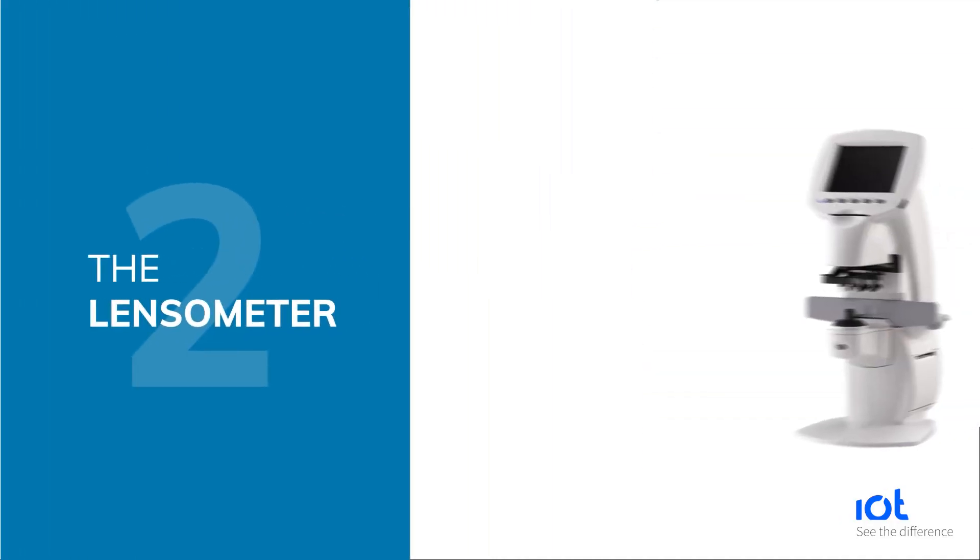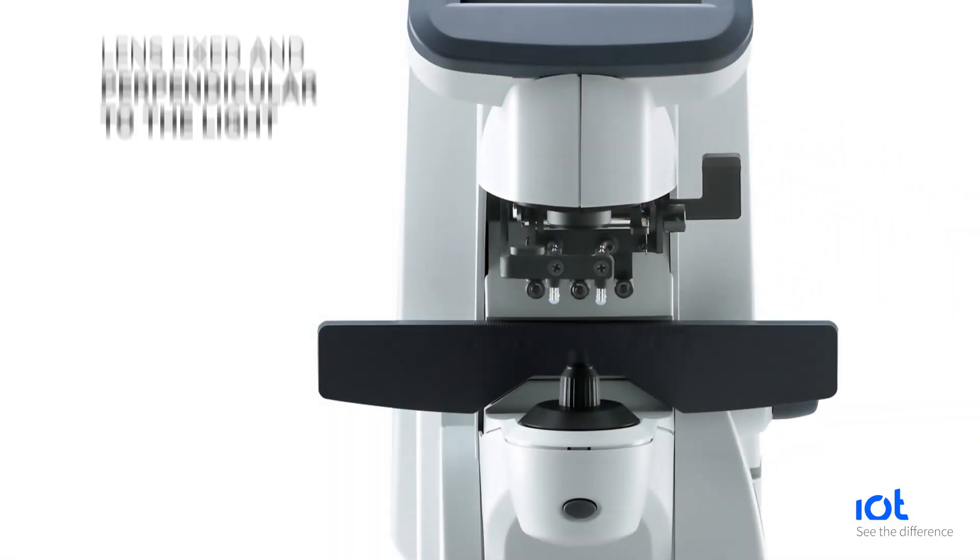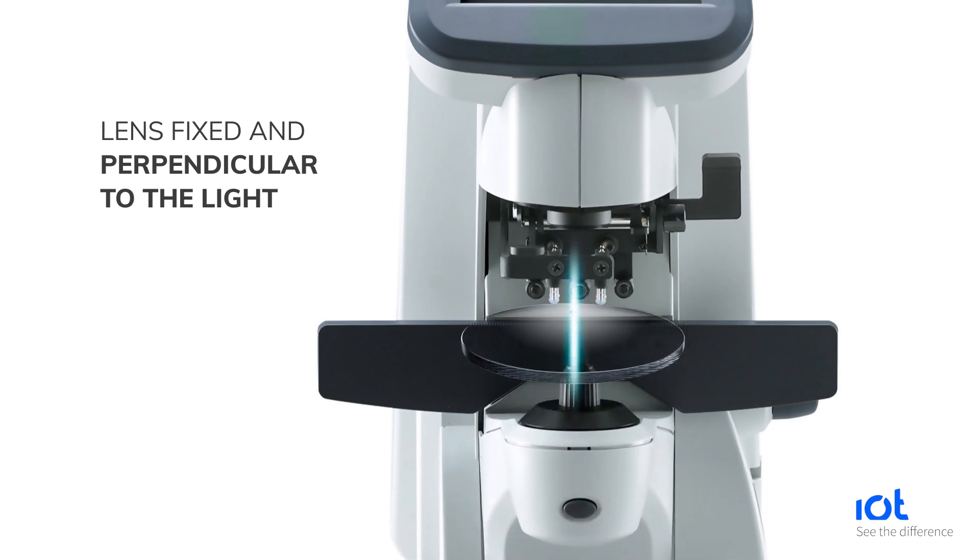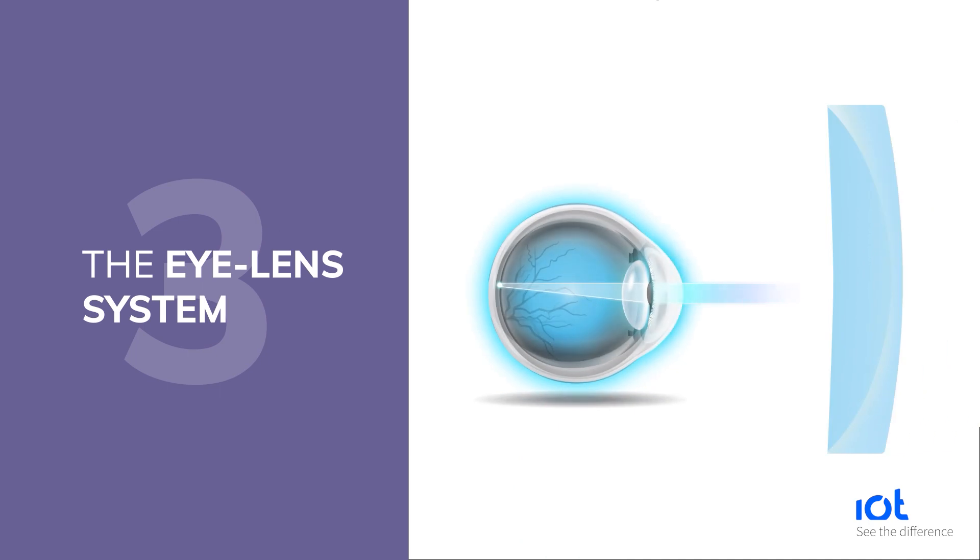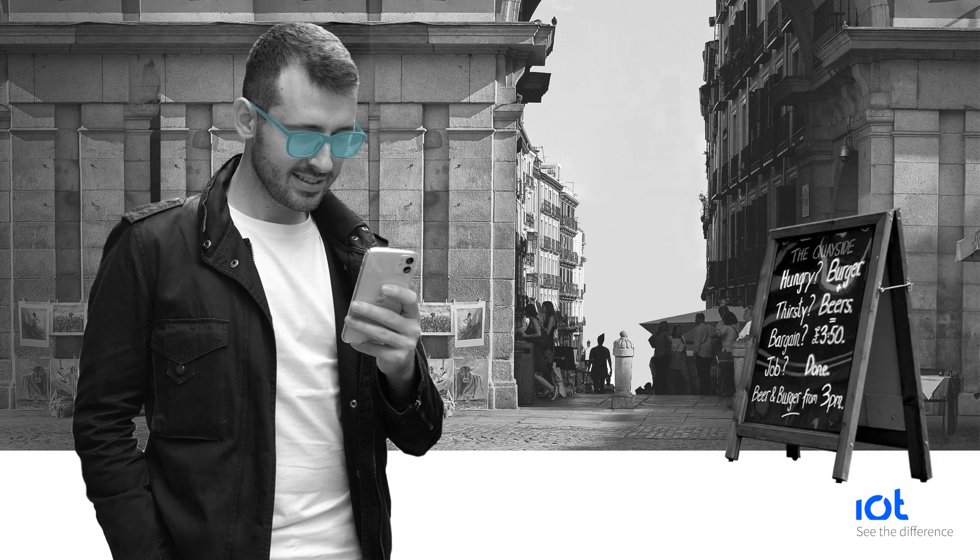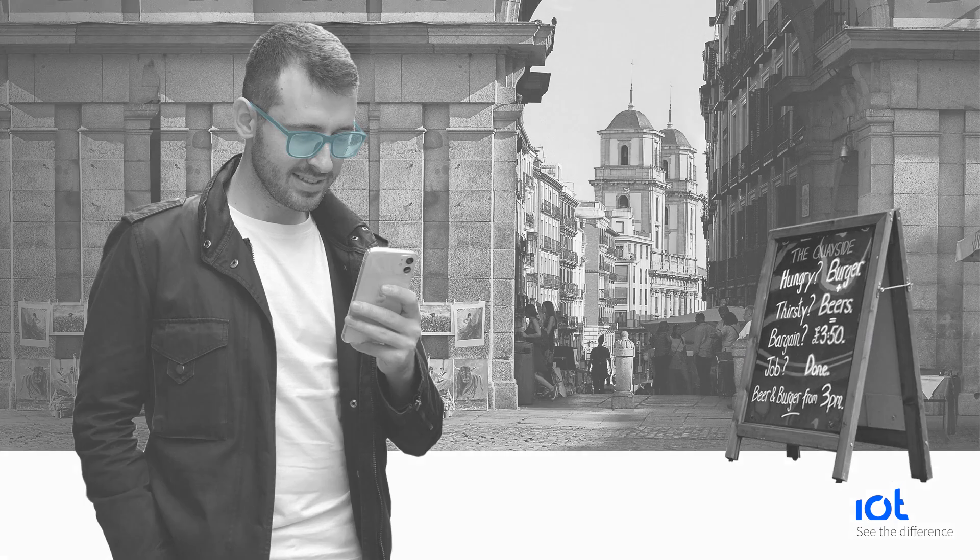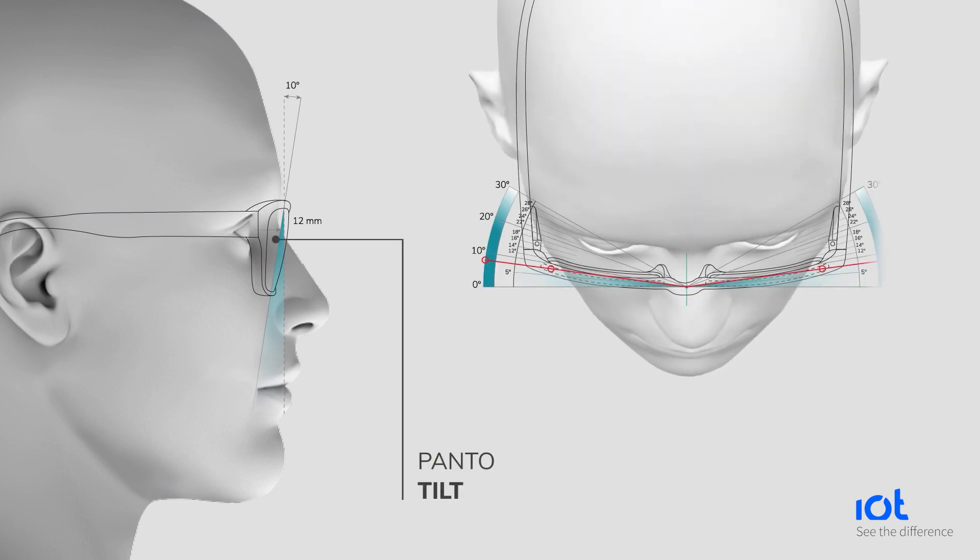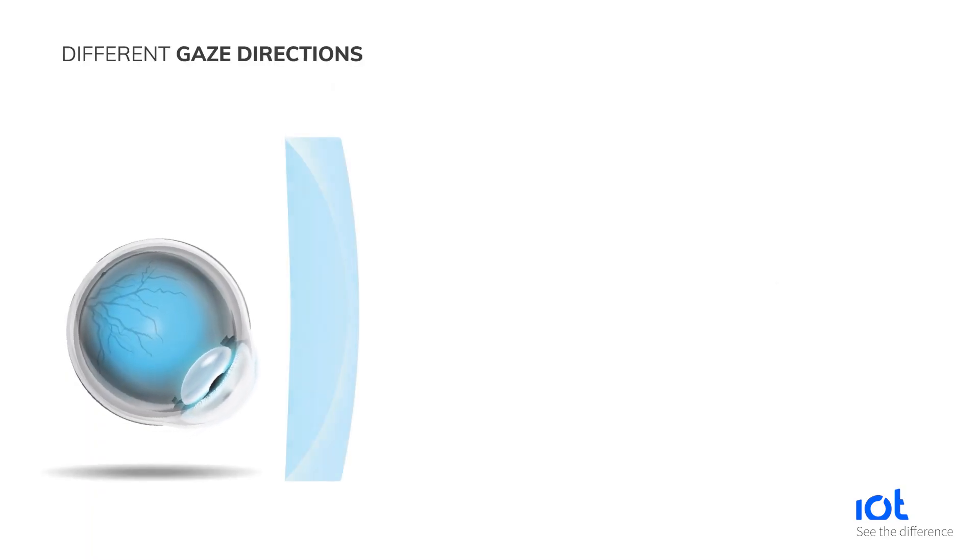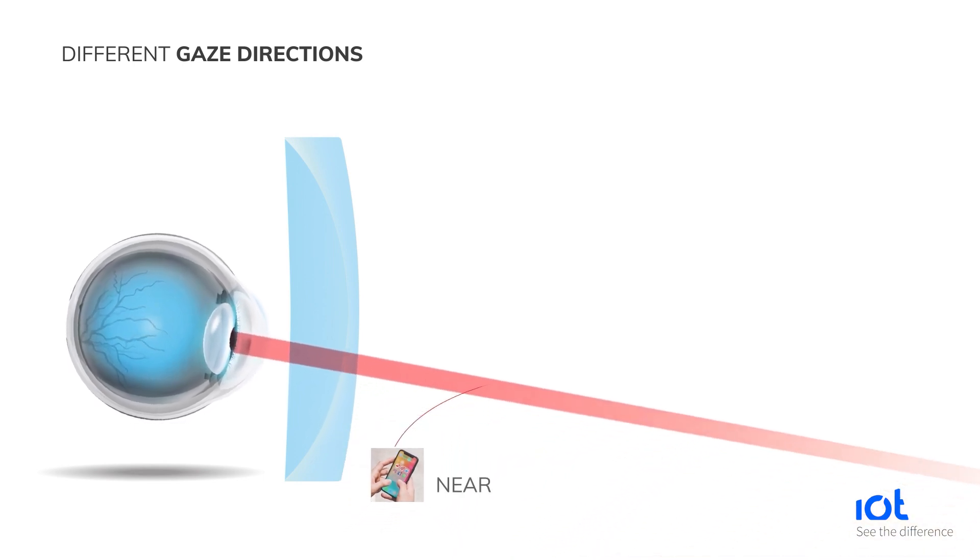A lensometer is used to measure lens power. The lens is fixed and perpendicular to the light beam of the system. The eye-lens system represents what happens in real life when a patient is wearing a pair of glasses. All frames have pantoscopic tilt and wrap angle. Eyes and lenses are not perpendicular, even in the central vision. Eyes move. People look at different gaze directions and focus on objects at different distances. Nothing is fixed.